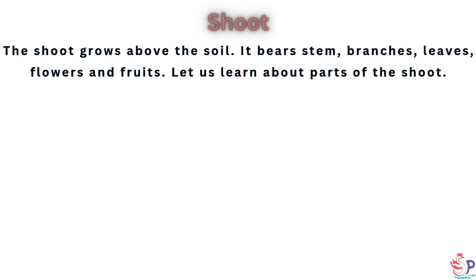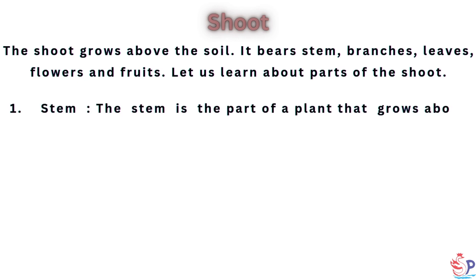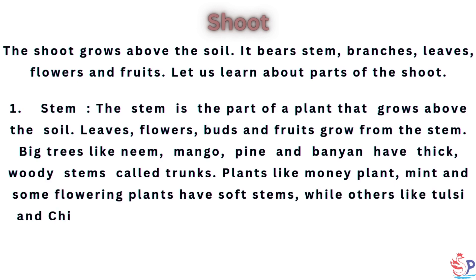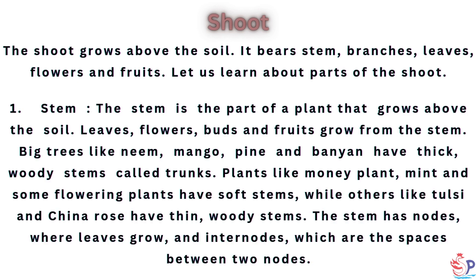The stem is the part of a plant that grows above the soil. Leaves, flowers, buds and fruits grow from the stem. Big trees like neem, mango, pine and banyan have thick, woody stems called trunks. Plants like money plant, mint and some flowering plants have soft stems, while others like tulsi and china rose have thin, woody stems. The stem has nodes, where leaves grow, and internodes, which are the spaces between two nodes.